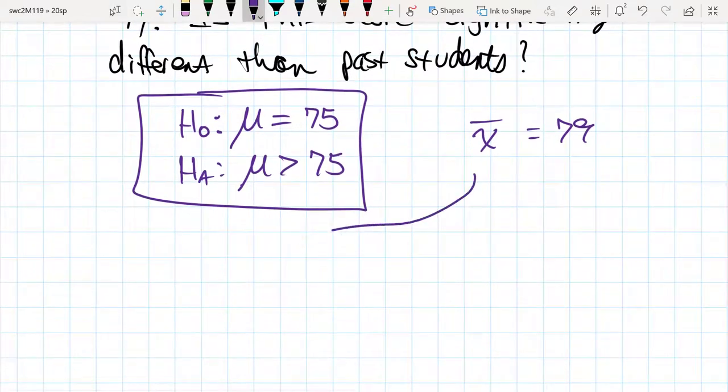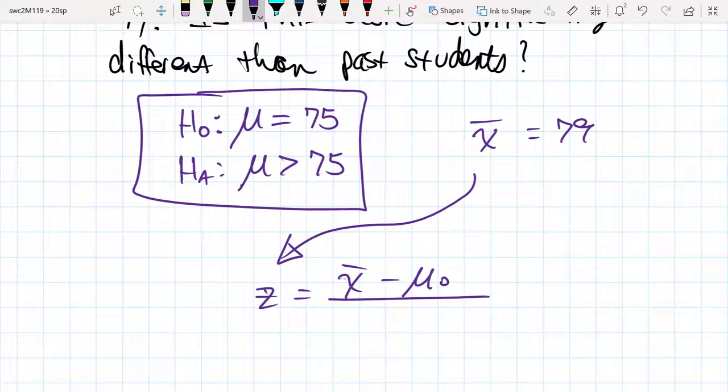Let's take our test statistic and convert it to a z-value. So this is our test statistic: x̄ minus μ. Let's see how far our sample is from the mean, divided by the standard error, where the standard error is σ over the square root of the sample size.